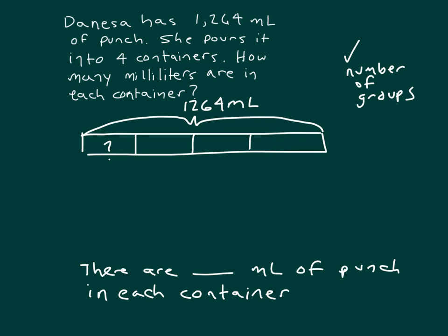In this case, to figure that out, we set up a division problem where we have 1264 milliliters and we're pouring it into each of those 4 containers.